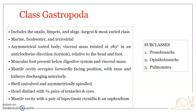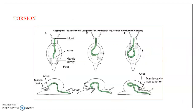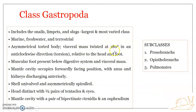A very important feature of gastropods is that it is a group of torted mollusks — mollusks with a torted body. Torsion refers to a 180-degree counterclockwise twisting of the visceral mass, mantle, and mantle cavity. In a normal mollusk, the mouth is at the anterior and the anal opening is posterior, opening into the mantle cavity, but in gastropods the body undergoes torsion.